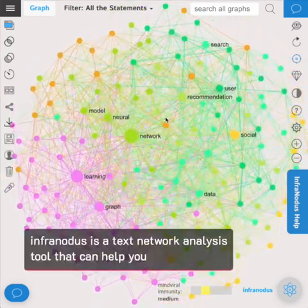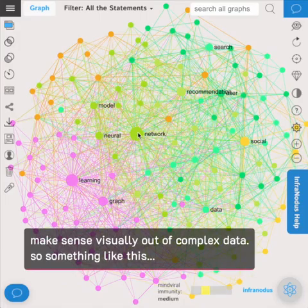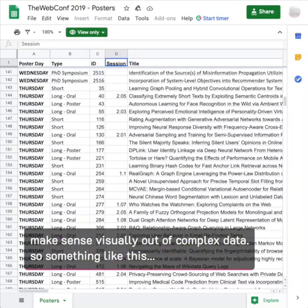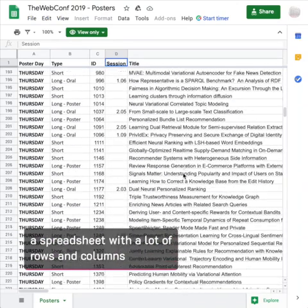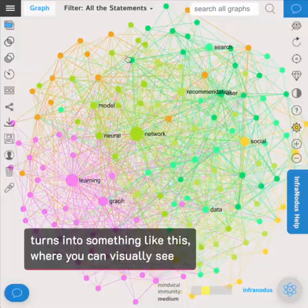Infranodus is a text network analysis tool that can help you make sense visually out of complex data. So something like this, a spreadsheet with a lot of rows and columns, turns into something like this.